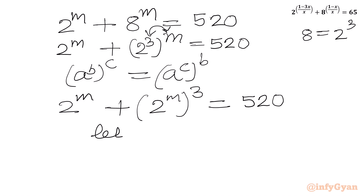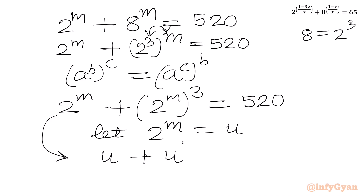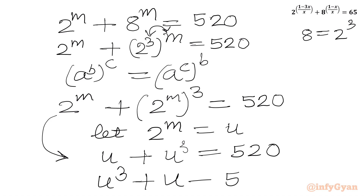Now we will assume 2 raised to m equals u. I will write our equation in u as: u plus u cubed equal to 520. Taking all terms to the left-hand side, I get: u cubed plus u minus 520 equal to 0.